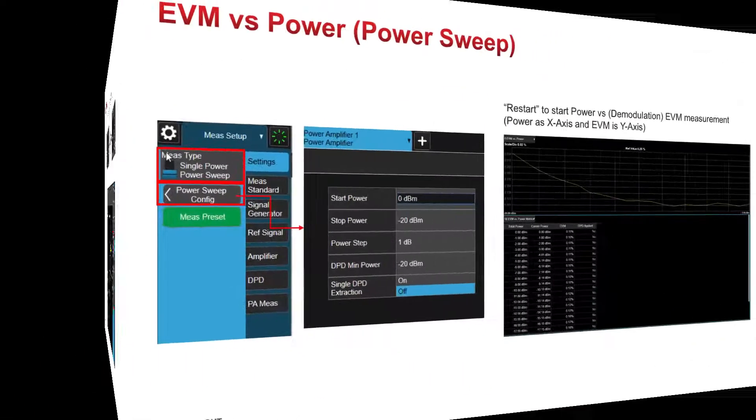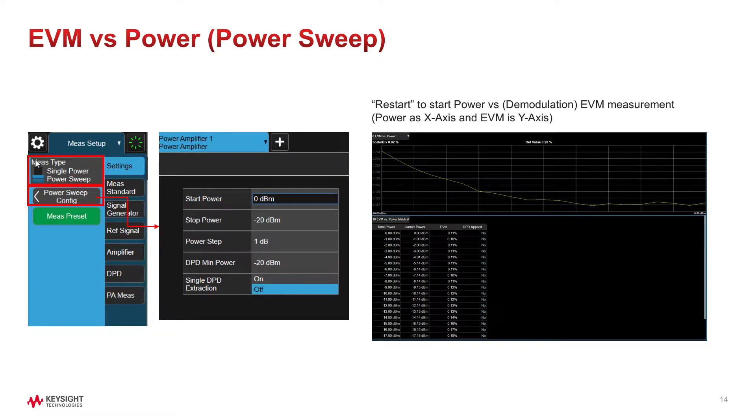Another common PA measurement is demodulated EVM against different P-out levels. It plots graph with EVM in Y-axis and P-out in X-axis to show how much EVM changes versus PA levels. Power sweep in PA mode provides easy way to make this measurement. You can simply specify start and stop power, size of power step, and which power level to enable DPD. Then, rest is done automatically by restarting measurement. You can also enable power servo to make sure P-out is adjusted at each power step.